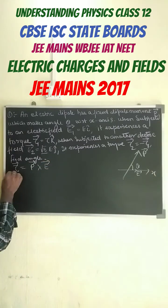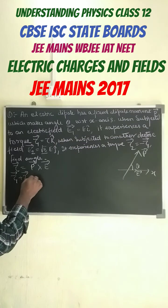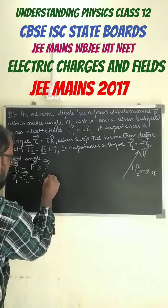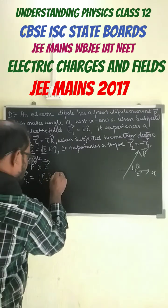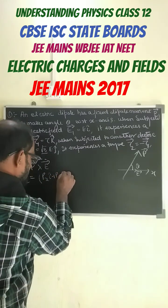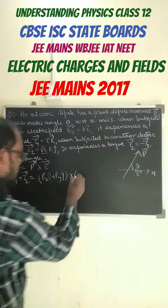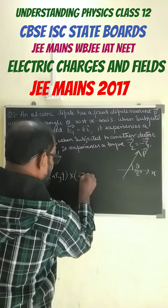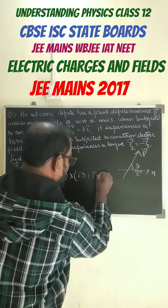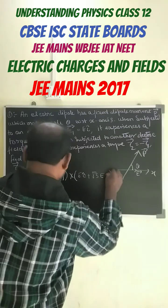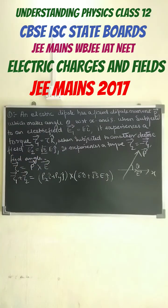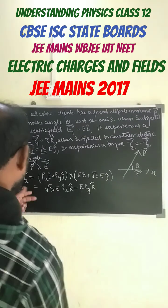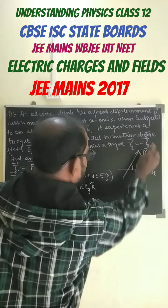So torque 1 plus torque 2 is written as (Px i-cap + Py j-cap) cross of E1, which is P i-cap plus root 3 E j-cap. On doing the cross product, torque 1 and torque 2 are opposite in sign.